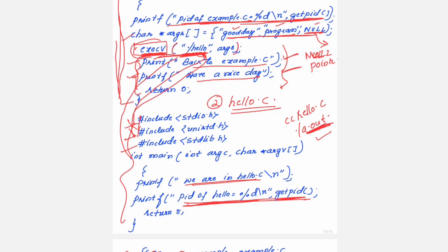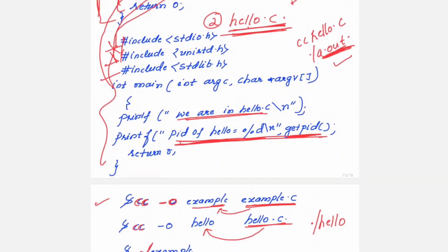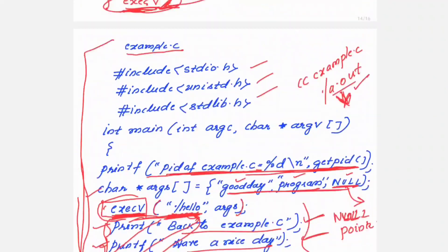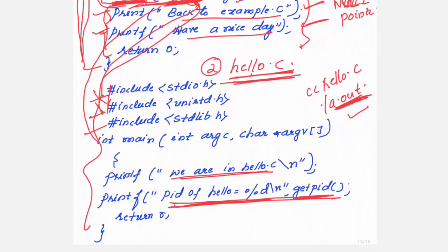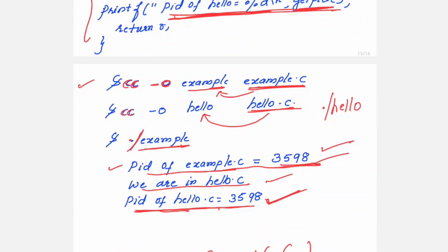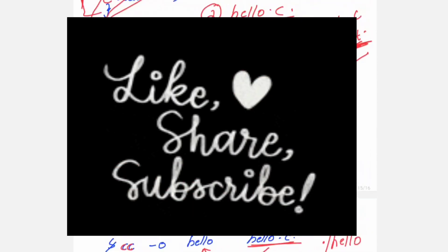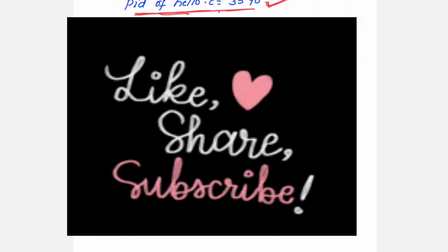EXEC will replace the current program with a new program present in some other file — here that is hello.c — and its contents are printed in the output when you execute example.c. This is how the EXEC system call is used in Unix. The fork, wait, and EXEC system calls are all for the Unix operating system. Hope you got to know the use of these system calls in user programs. If you find this session useful, please like, share, and subscribe to my channel. Thank you, bye-bye and take care.